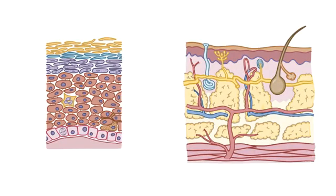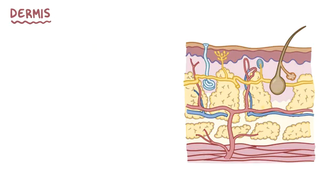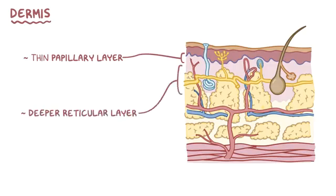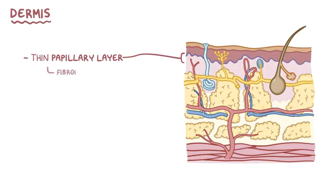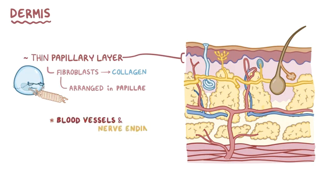Underneath the epidermis is the thicker dermis layer that contains the nerves and blood vessels. The dermis is divided into two layers: a thin papillary layer just below the epidermis, and a deeper reticular layer. The papillary layer contains fibroblasts which produce a connective tissue protein called collagen, arranged in finger-like projections called papillae, each containing blood vessels and nerve endings that sense pain and fine touch.